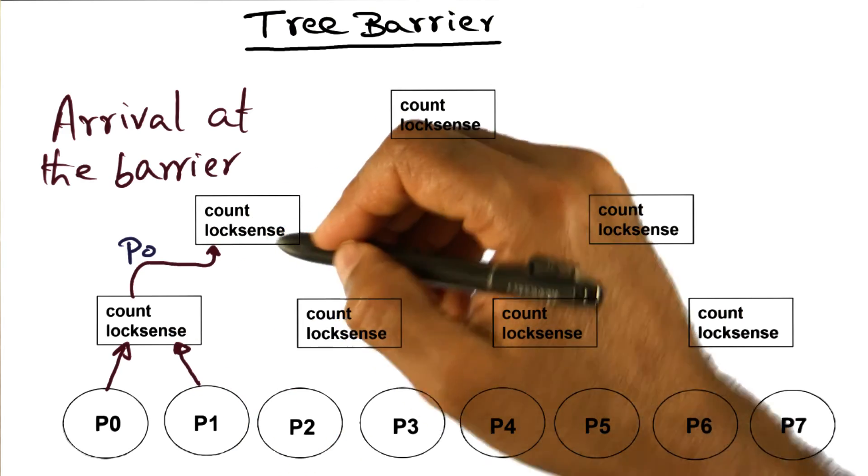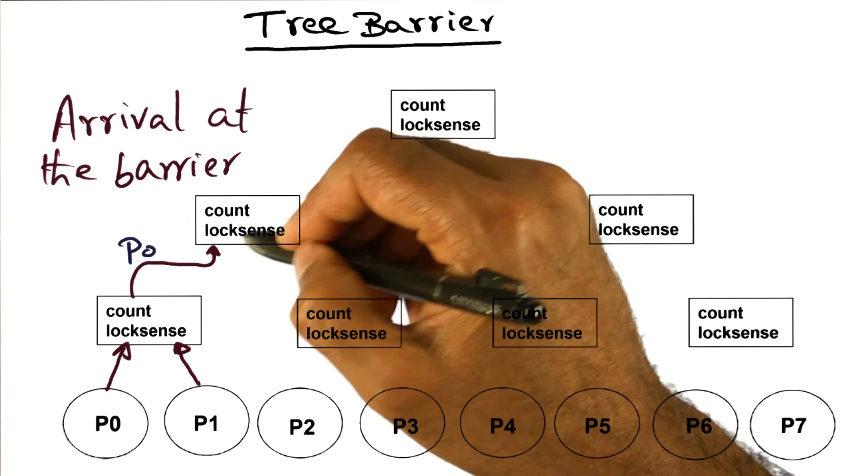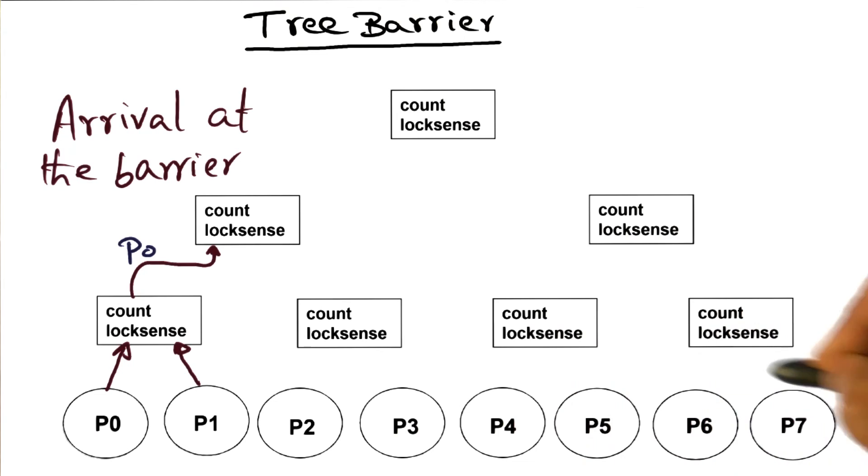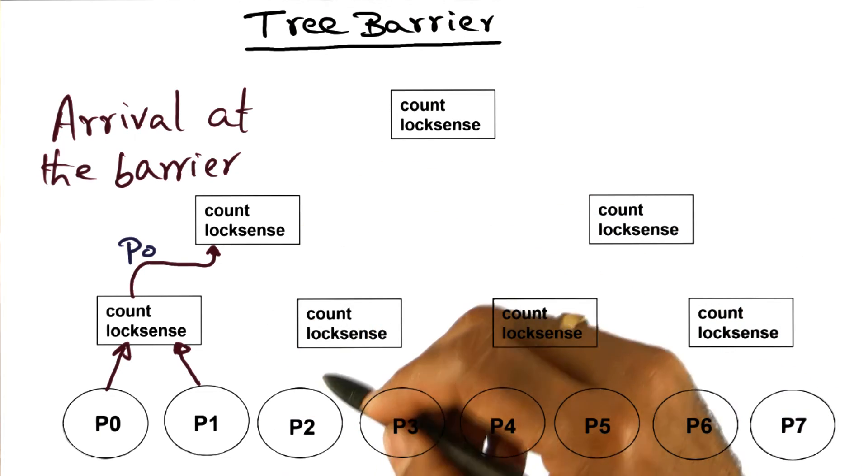p1 is waiting on lock sense to reverse here. p0 is now waiting on lock sense to reverse here, because it has arrived at the barrier, but his partners are still stragglers. They have not arrived at the barrier yet.